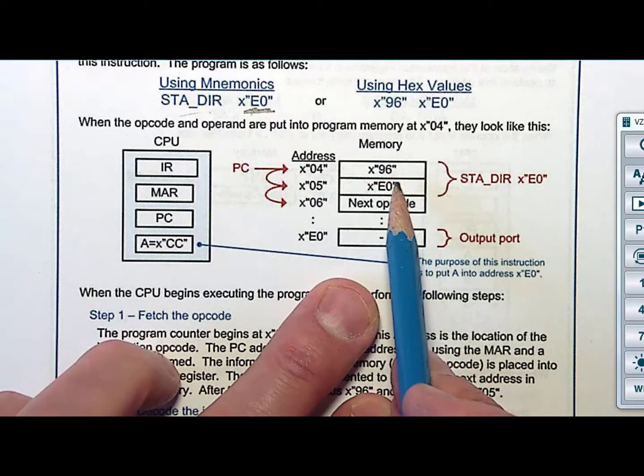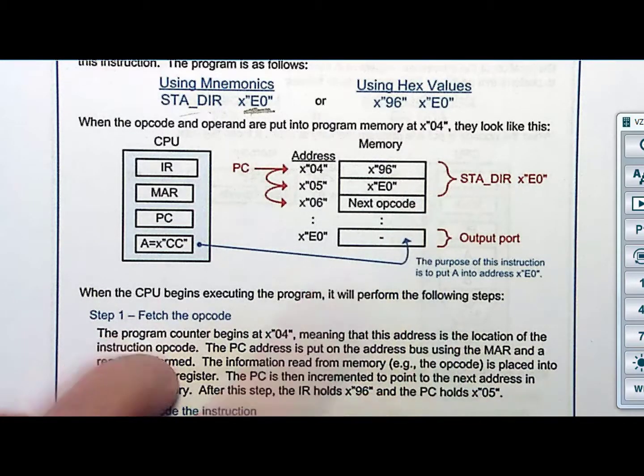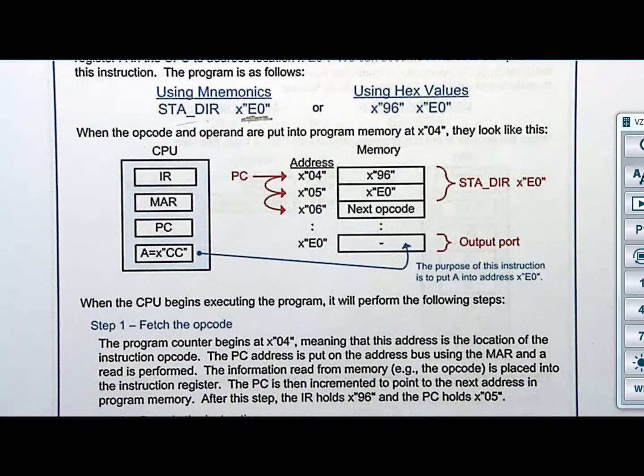Not only you got to fetch the op code, you're going to fetch the address of where you were going to store to. So actually a store requires two reads, one to get the op code, one to get the operand, and then a write. So read, read, write. This is going to take three memory accesses. Let's look at how it's going to look.